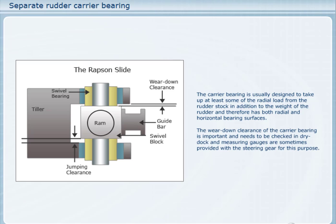The wear down clearance of the carrier bearing is important and needs to be checked in dry dock. Measuring gauges are sometimes provided with the steering gear for this purpose. There is also clearance at the top of the Rapson slide arrangement, so that if the rudder should be lifted by wave action in heavy weather, its upward movement will be stopped by its clearance to the hull before exceeding the clearance to the Rapson slide — sometimes referred to as the jumping clearance. It should also be checked during dry dock.